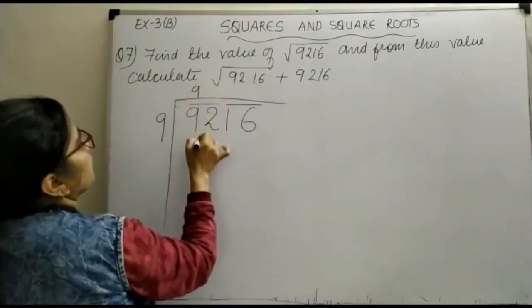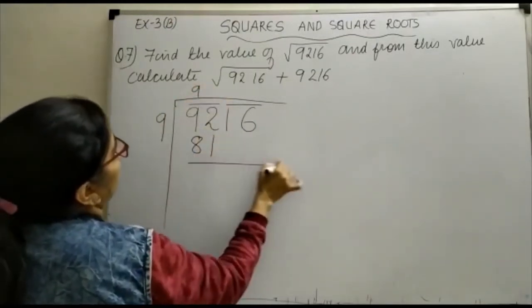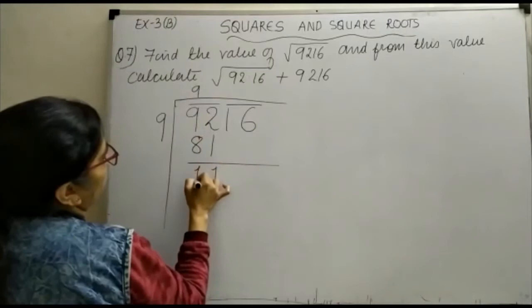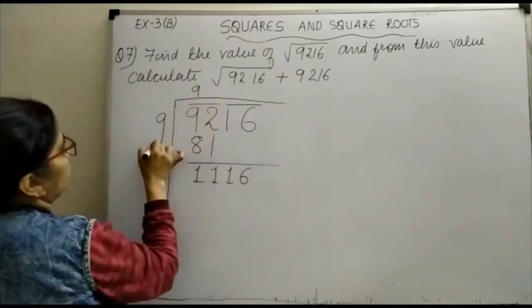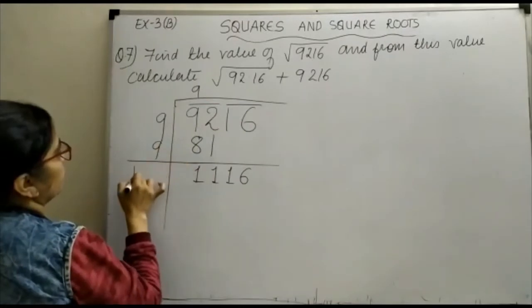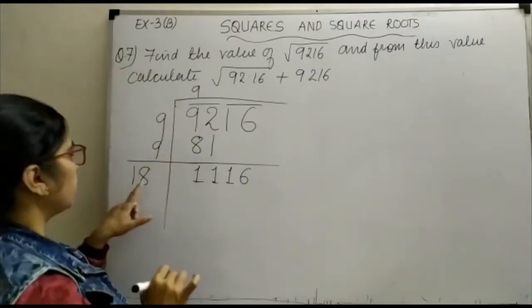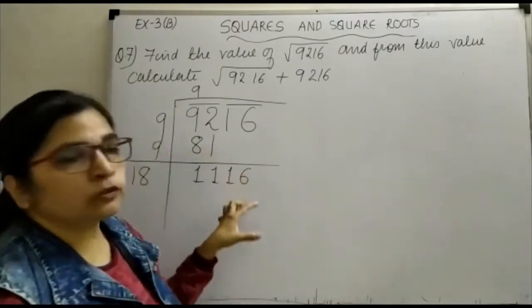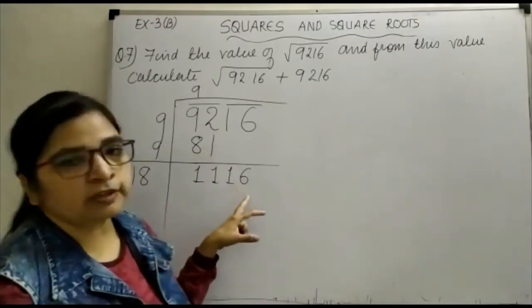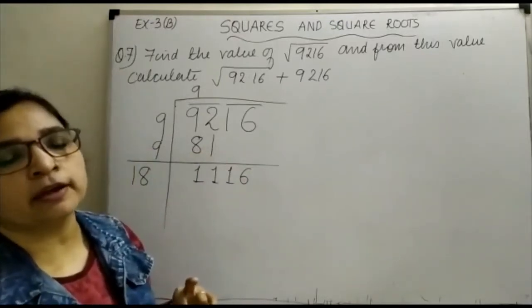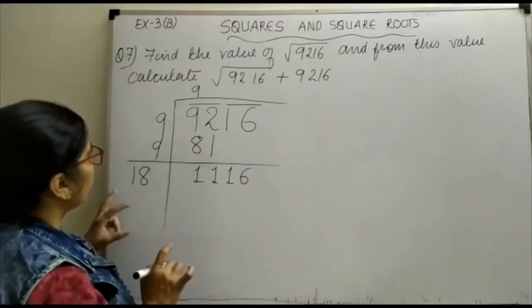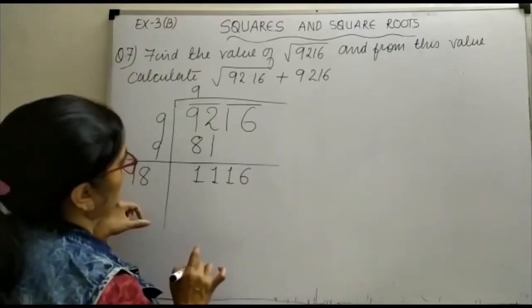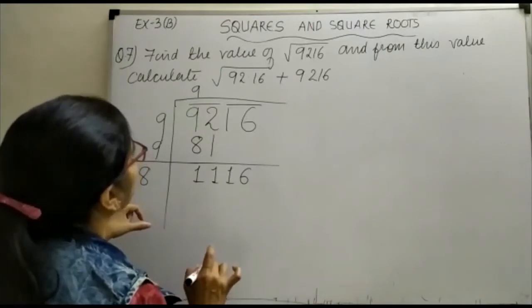9 squared is 81. Then you will have to add 1, then here it will be 16. You have to add 9 and it will be 186. The next number here is 6.